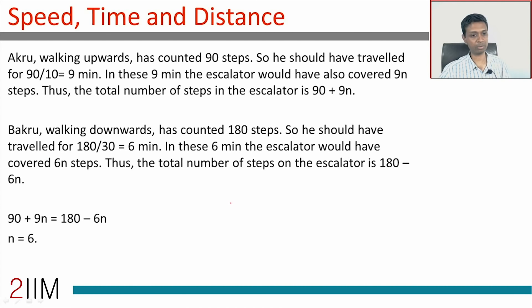When Akru, walking upwards, has counted 90 steps, so he should have traveled for 90/10 = 9 minutes. He's counting 90 steps, he takes 10 steps a minute, he travels for 90 steps. In these 9 minutes, the escalator would have traveled 9N. Or Akru would have traveled 90 + 9N. The escalator is also contributing to the way he's traveling.